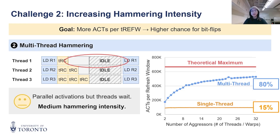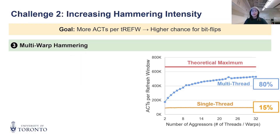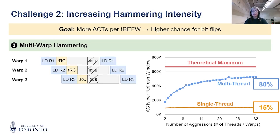So can we do even better? Yes, by multi-warp hammering. A warp consists of typically 32 threads executing the same instruction together. In multi-warp hammering, we utilize one effective thread per warp and use multiple warps to issue requests. Unlike threads within a warp, warps are scheduled independently.